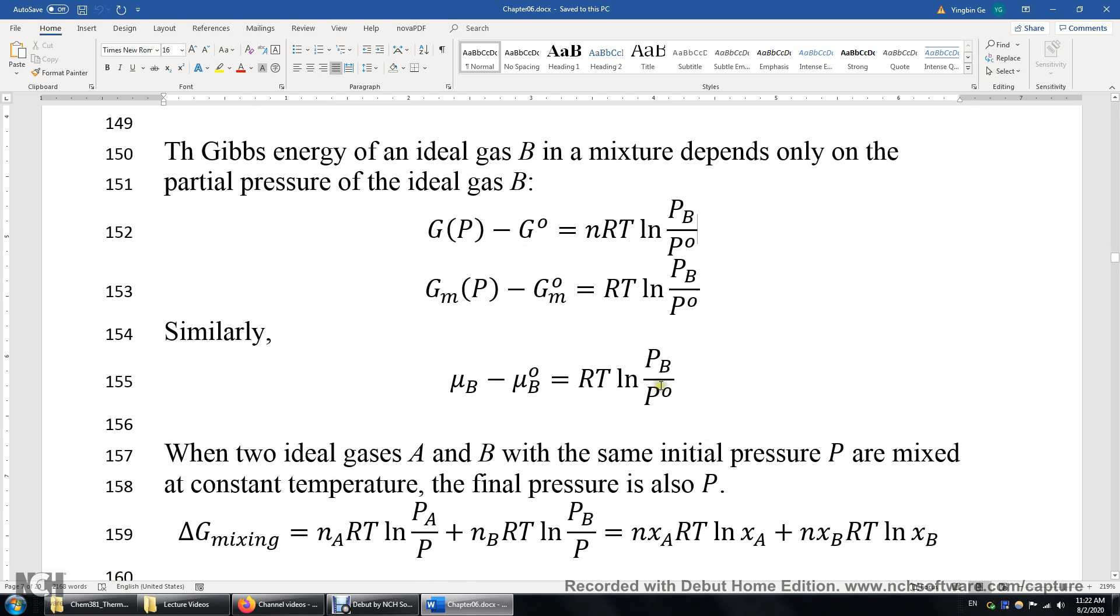And similarly, the chemical potential of B in a gas mixture is simply the standard chemical potential of B plus RT times the logarithm of the partial pressure of B over P0.